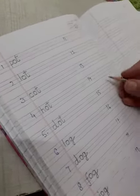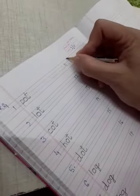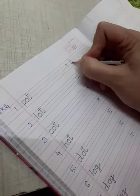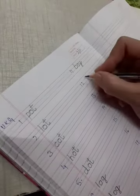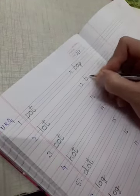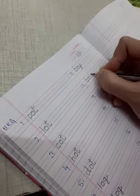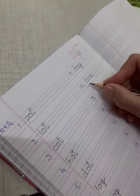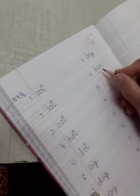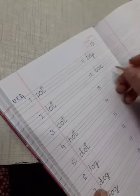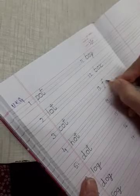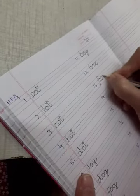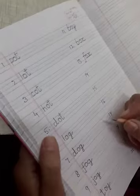Next number eleven, boy. B-O-Y boy. Boy is ladka. Box, B-O-X box. O ki sound se, O waval se, O ki sound arhe hai na. Fox, F-O-X fox. Fox is lomdi.